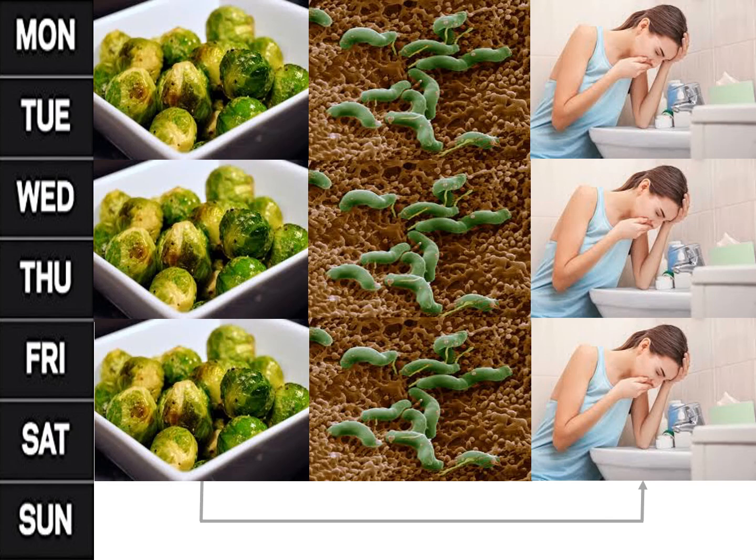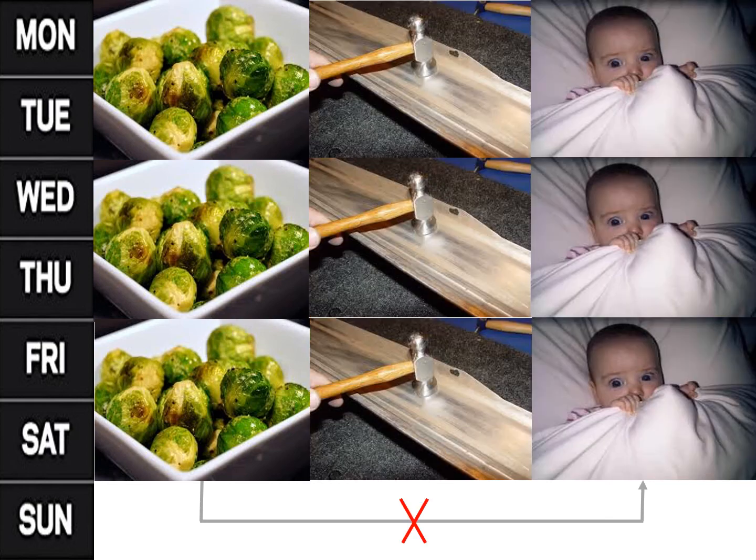But suppose instead that three times after we eat sprouts, we hear unpleasant noises and thus experience fear. In the future, the sprouts alone might not elicit fear. In other words, we learn to associate sprouts with nausea more rapidly than we learn to associate sprouts with fear.